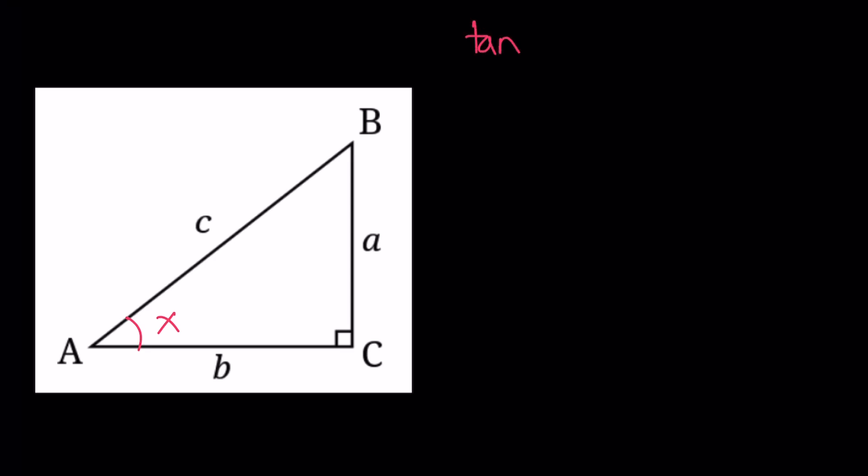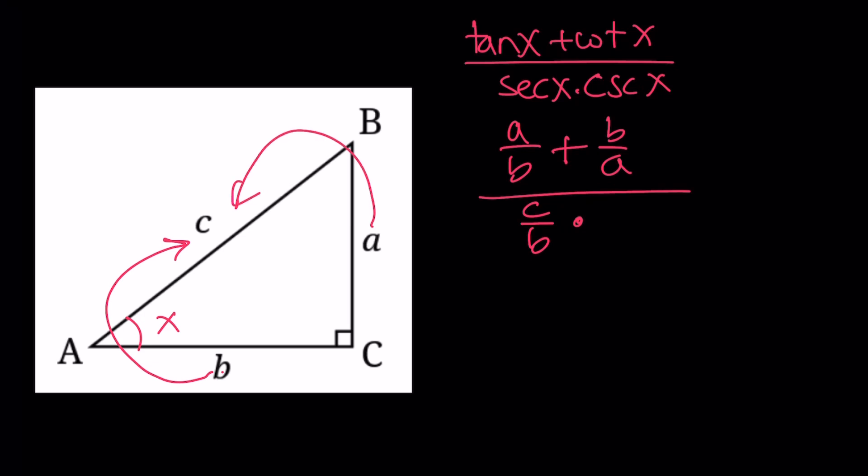Our expression was, remember, tangent x plus cotangent x divided by secant x times cosecant x. What is tangent? Opposite over adjacent. So, it's a over b. What is cotangent? It's the reciprocal adjacent over opposite, which is b over a. Remember, SOCATOA, if you forget your trigonometric functions. Secant is 1 over cosine. Cosine x is b over c. Its reciprocal would be c over b times. And cosecant is 1 over sine. Sine is a over c. Its reciprocal would be c over a. Great.